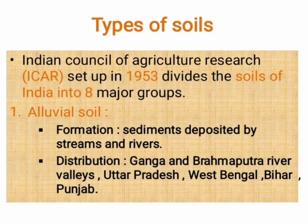Alluvial Soils are sediments deposited by streams and rivers. Alluvial Soil is found in the areas of Ganga and Brahmaputra River Valleys, Uttar Pradesh, Uttaranchal, Punjab, Haryana, West Bengal and Bihar.